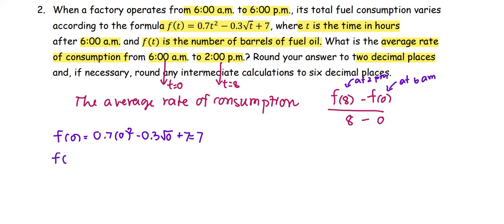The function value at 8 equals 0.7(8)² - 0.3√8 + 7. The calculator returns 50.951472, keeping the intermediate calculation to 6 decimal places.